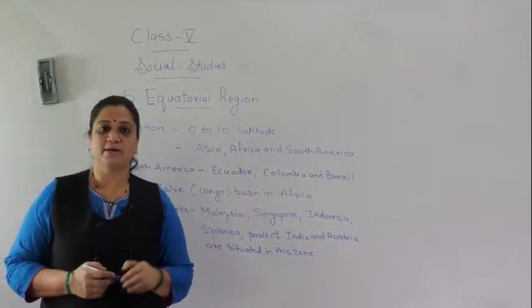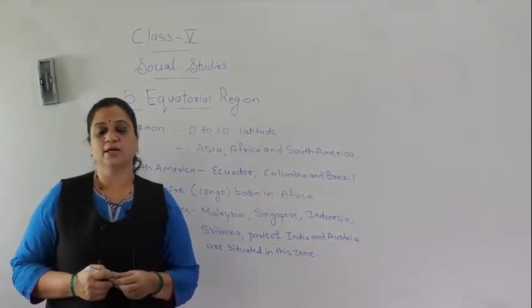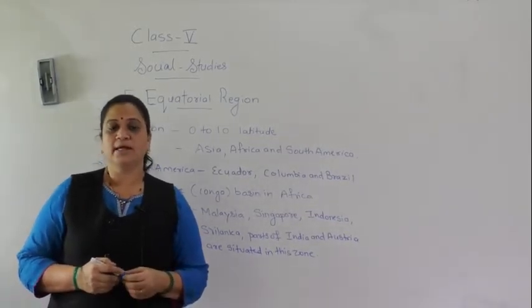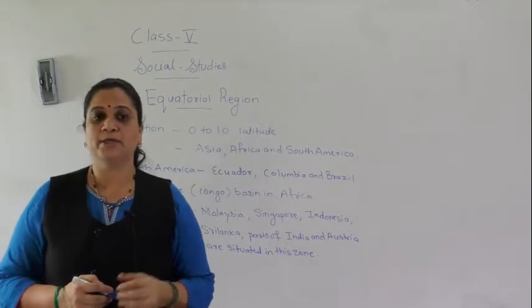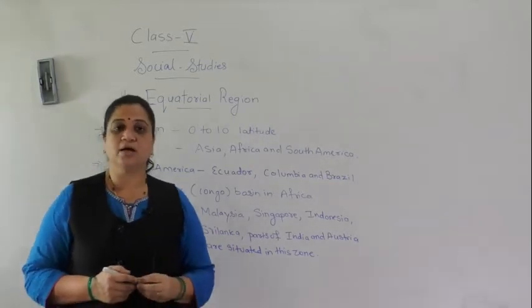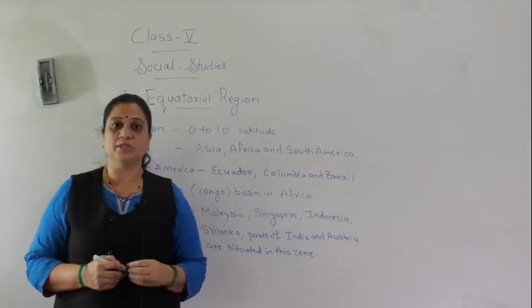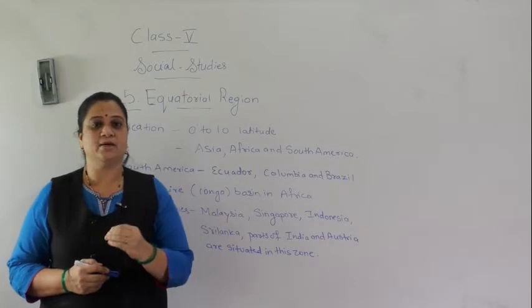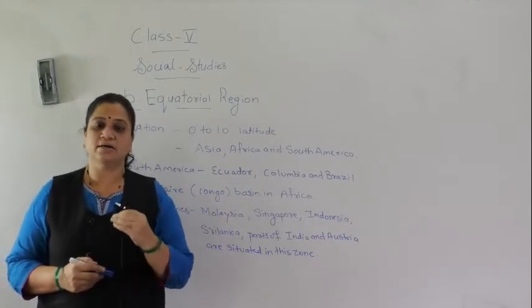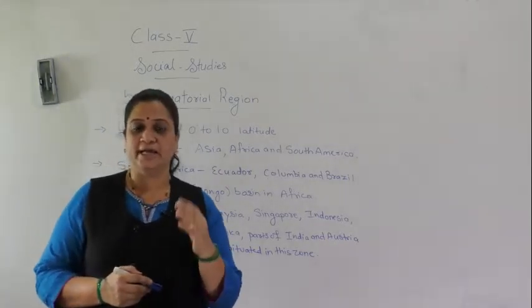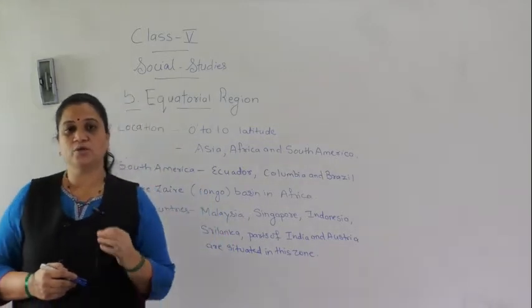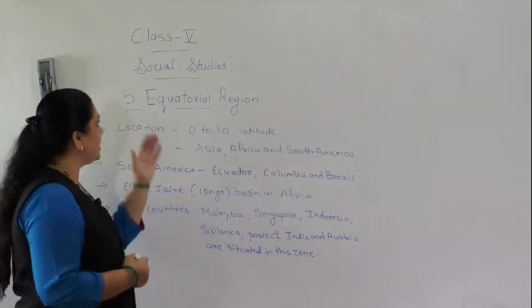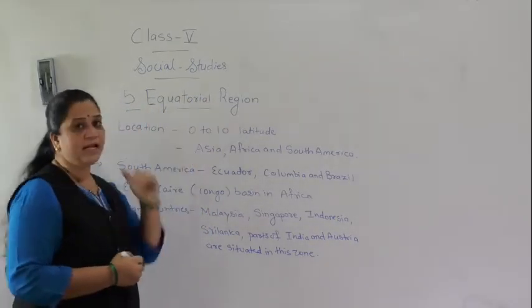Hello, my dear students, welcome again for the online classes. Today we will start with the new lesson: the equatorial region. In the last lesson we studied about the heat zones. Our earth is divided into three heat zones based on the intensity of heat received by the earth's surface — the torrid zone, temperate zone, and frigid zone. Now in this lesson we will study about the equatorial region.